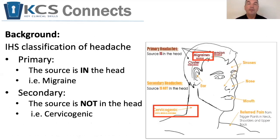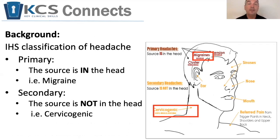A little bit of background about headaches: the International Headache Society tends to subclassify headaches into two major groups. First, primary headaches, where the source is in the head itself — a good example of that would be migraine. And then secondary headaches, where the source of the headache is not in the head itself — a good example of that would be cervicogenic headache.